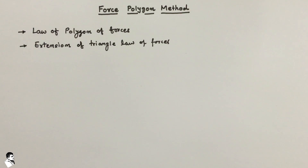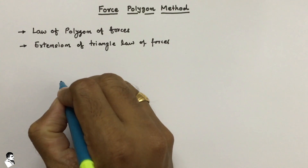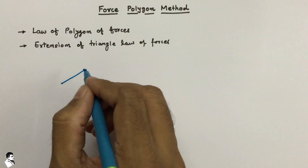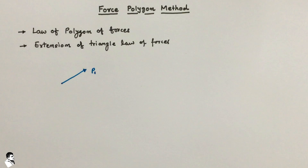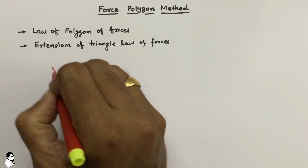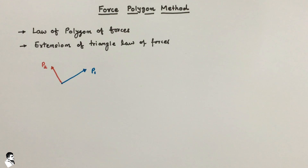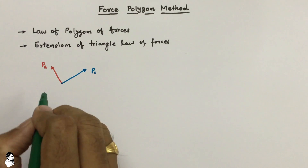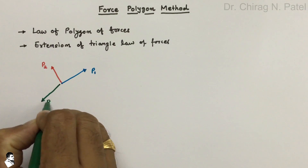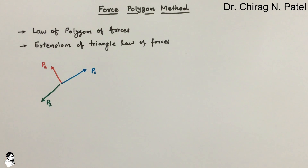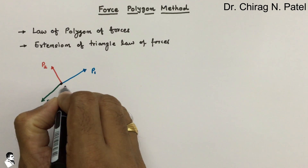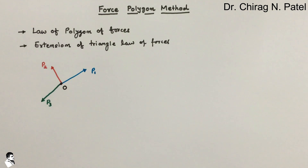To understand this, consider a system of forces. We have force P1 acting in one direction, force P2 acting in another direction, and force P3 acting in yet another direction. Here the forces are more than two, so this polygon method is useful for this type of condition. All these forces are acting at point O.